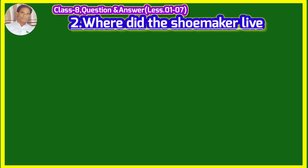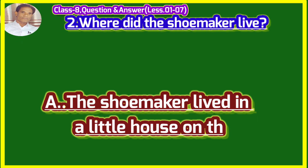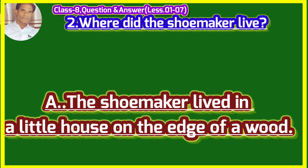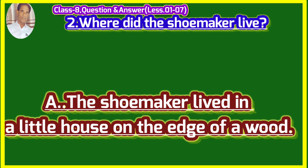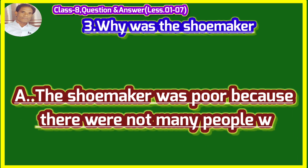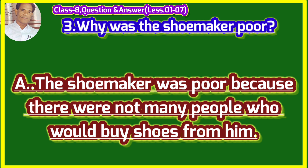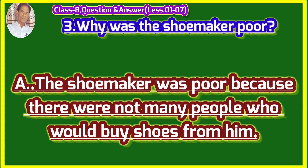The shoemaker (juta banane waala) — where did he live? (kahaan rahata tha). The shoemaker lived in a little house on the edge of a wood. Mochi jungle ke kinaare ek chote se ghar mein rahata tha. Why was the shoemaker poor? (Mochi garib kiyon tha). The shoemaker was poor.